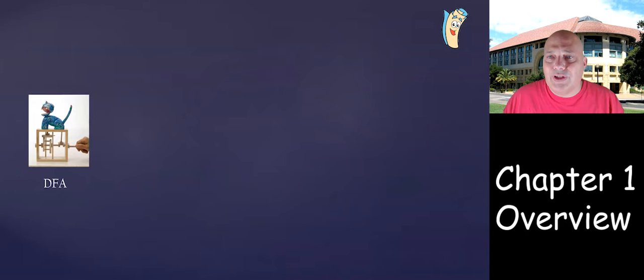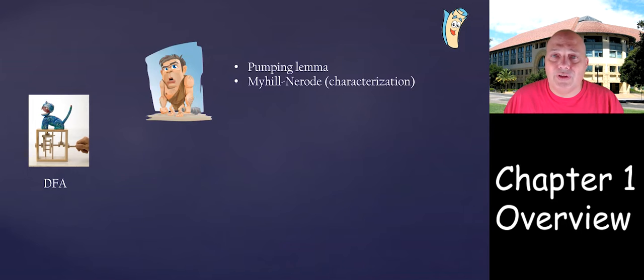Knowing what we can compute with DFAs, we will turn to what we cannot compute. The next step is to show limitations of DFAs. We will show it through two properties. One is the pumping lemma, which will be very useful, very easy to apply in some cases, and will show that several languages that are pretty simple cannot be computed by a DFA.